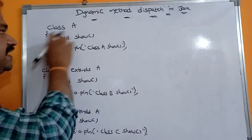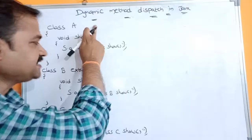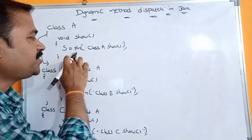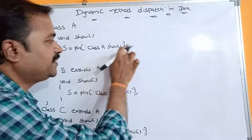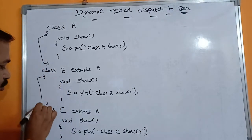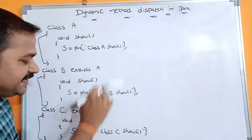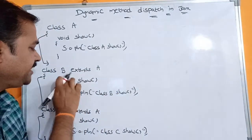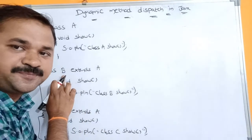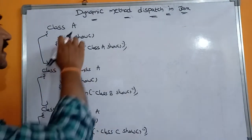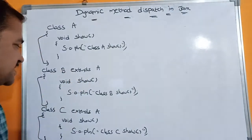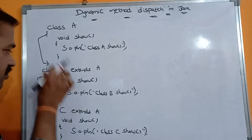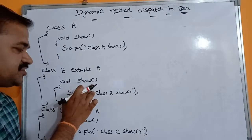Here we have a class called A, which is the base class. This base class contains a method called show, with the body System.out.println("Class A show method"). We have also created two classes, B and C, by inheriting from A. Class B is not satisfied with class A's show method definition, so class B provides its own definition for the show method.